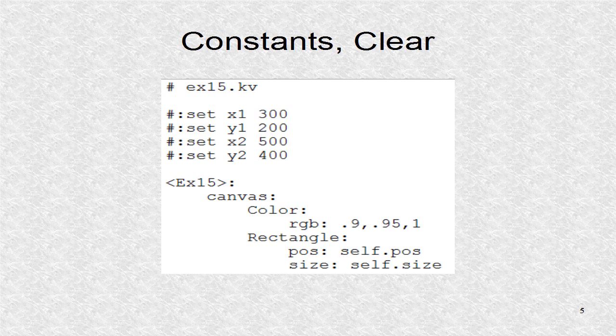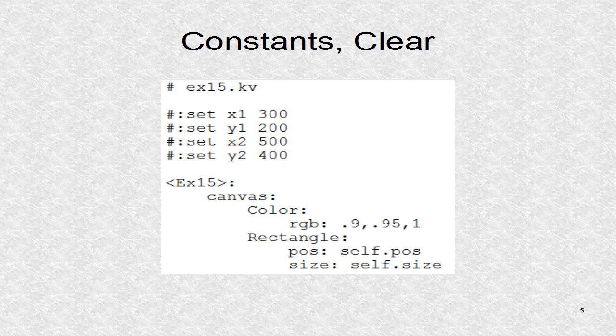The set directive is used to set the four constants. Then the window is cleared with a color with a light blue tint.